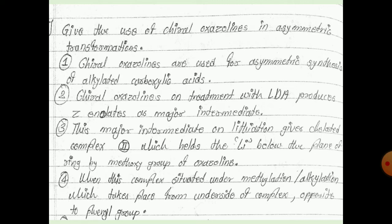Chiral oxazolines are used for the asymmetric synthesis of alkylated carboxylic acids. The chiral oxazolines, upon treatment with LDA, produce a Z-enolate as the major intermediate.